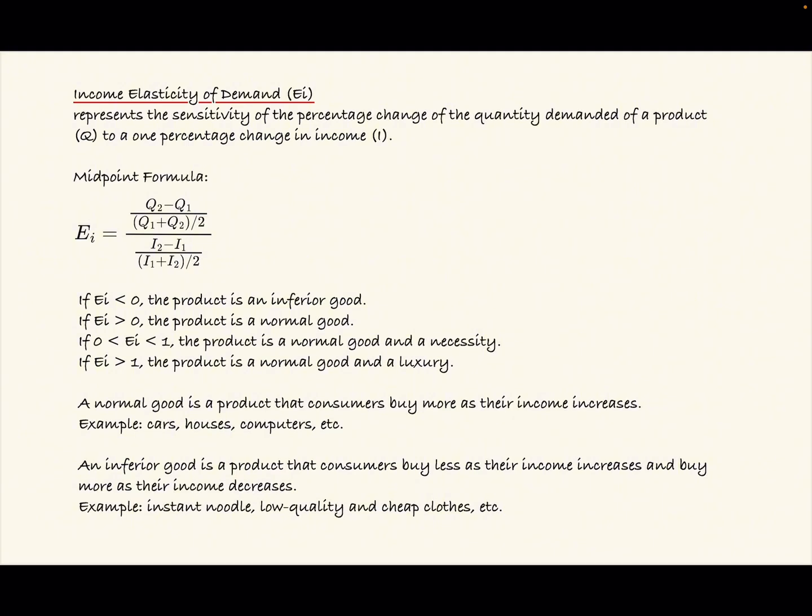Now if EI is between zero and one, the product is a normal good and a necessity. And if EI is greater than one, the product is a normal good and a luxury.